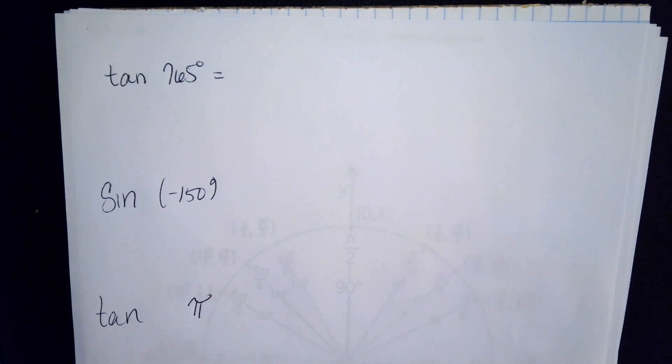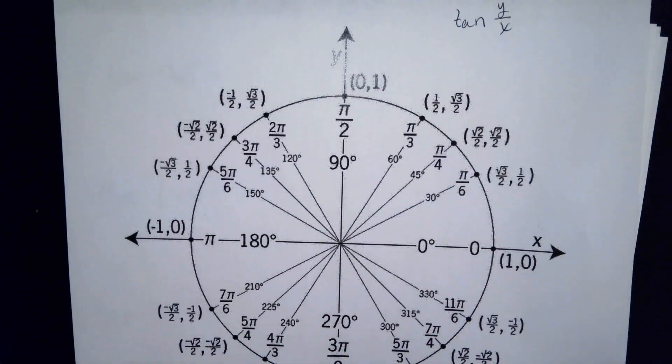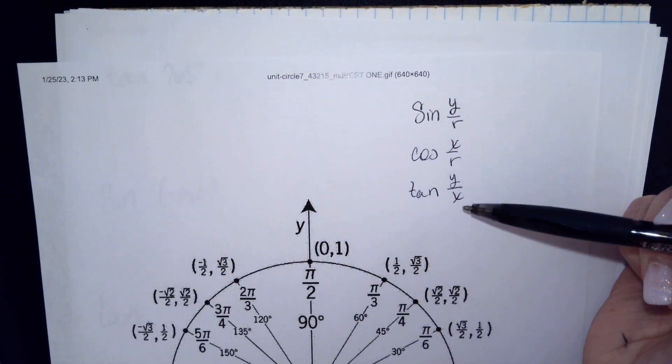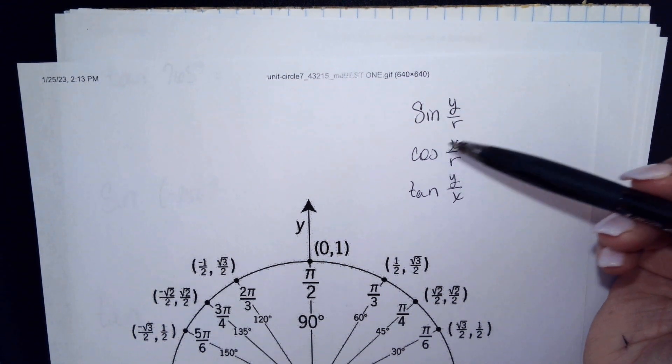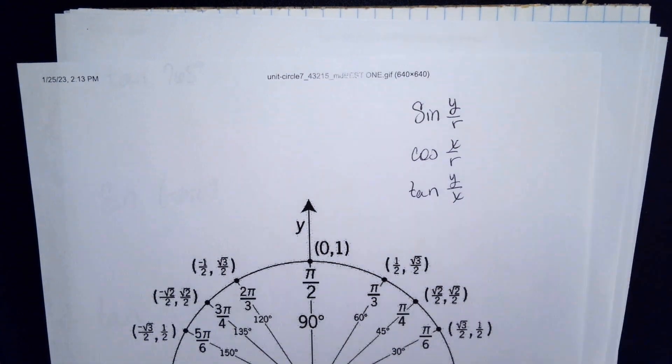If you're asked to find the tangent of 765 degrees, first I want to make sure that you have your unit circle handy. I've written on my unit circle some notes here. Sine is y over r, cosine is x over r, and tangent is y over x.